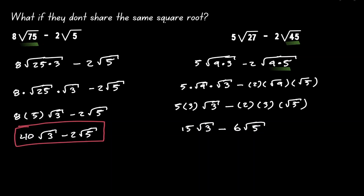This is as far as we can go in terms of simplification, because 3 and 5 — we cannot write them out as a multiple of a perfect square. After the simplification, notice that we were not able to match the same value inside the square root. Therefore, we cannot combine these two terms.